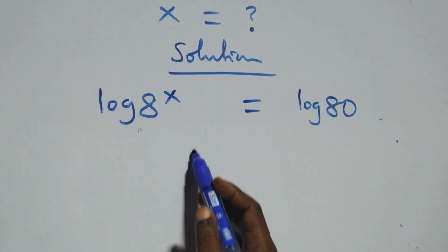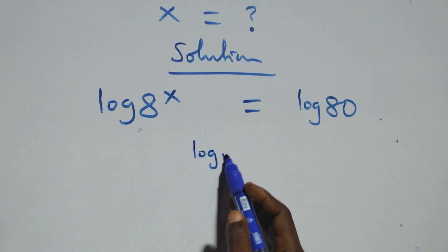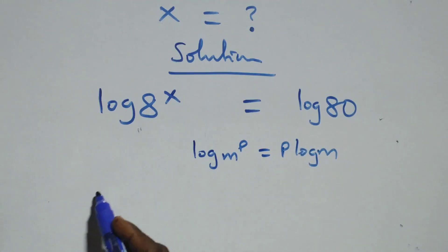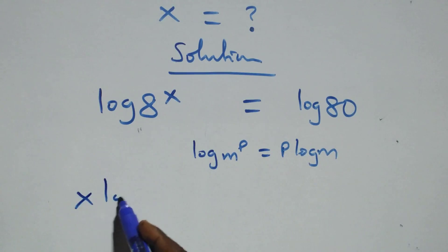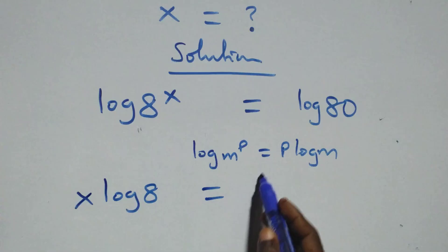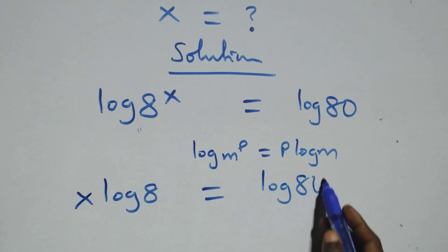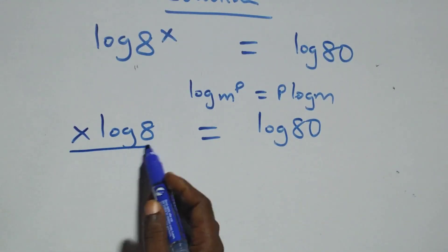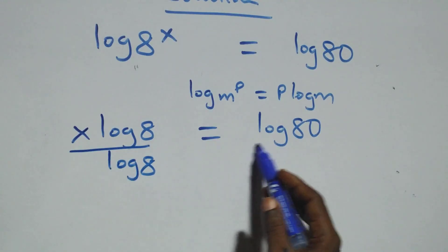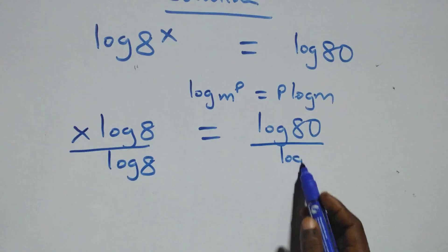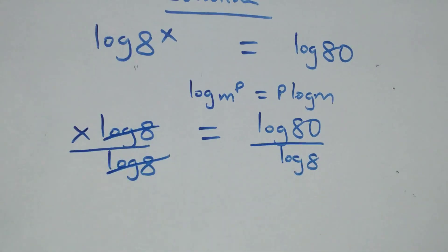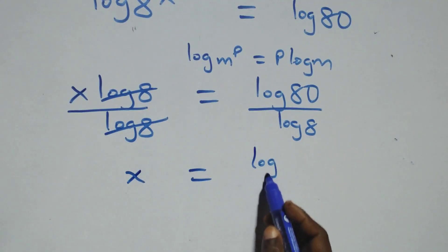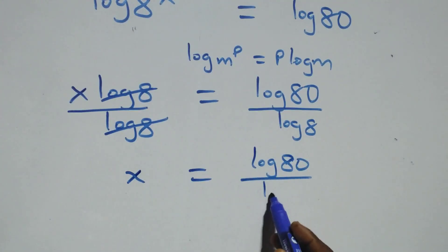We apply the power rule of logarithms: log m raised to the power p is the same as p log m. This becomes x log 8 equals log 80. Next, we divide both sides by log 8, and log 8 cancels, giving us x equals log 80 over log 8.